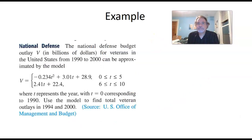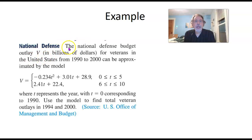And one more example. I got this from some book or other, maybe ours. We've got this rule here. The National Defense Budget Outlay, V, in billions of dollars for veterans in the United States from 1990 to 2000, can be approximated by the model V equals—and then there's one formula that we use if T is between 0 and 5, and another formula that we use if T is between 6 and 10, where T represents the year, T equal to 0 corresponding to 1990. Use the model to find total veteran outlays in 1994 and 2000.